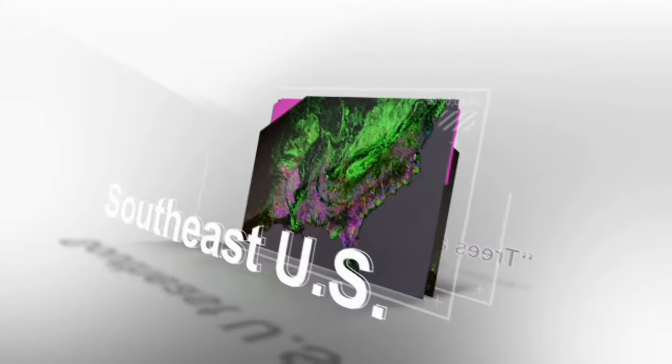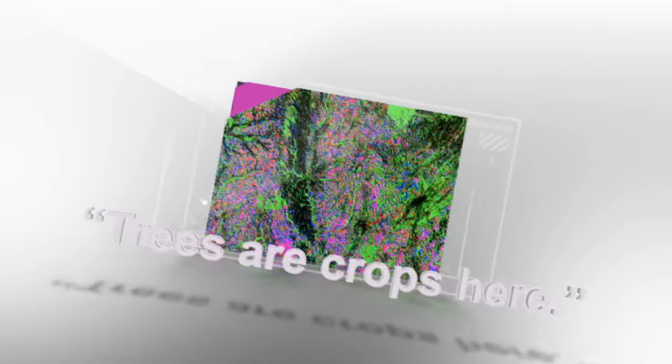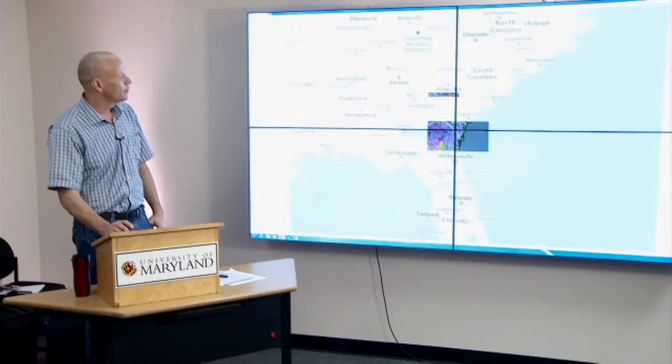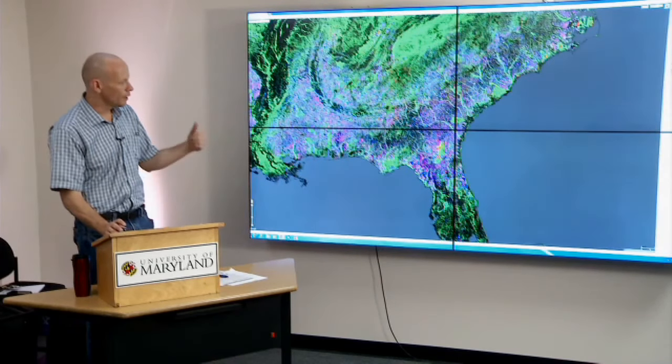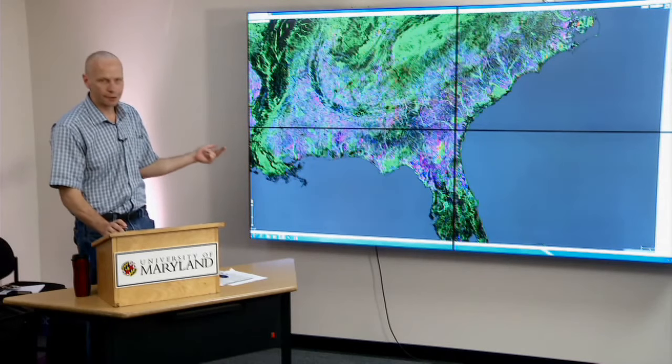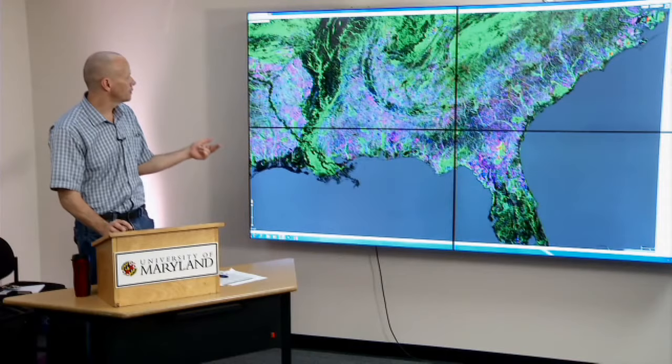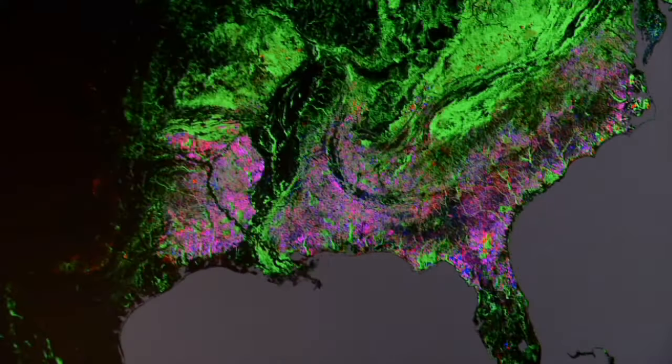Probably the most intensively used forest landscape is found in the southeast United States and in this product you can see all of the reds, blues and magentas are indicative of forest disturbance or recovery. And you see some really intense land uses.